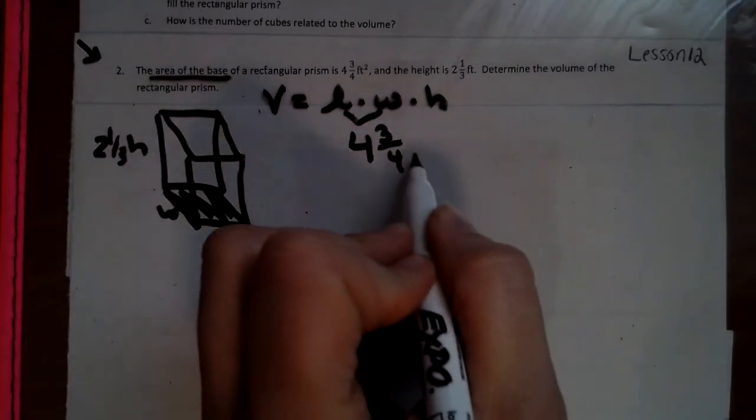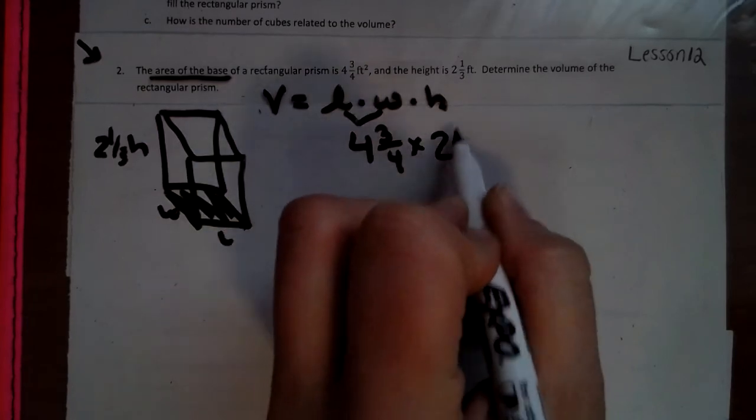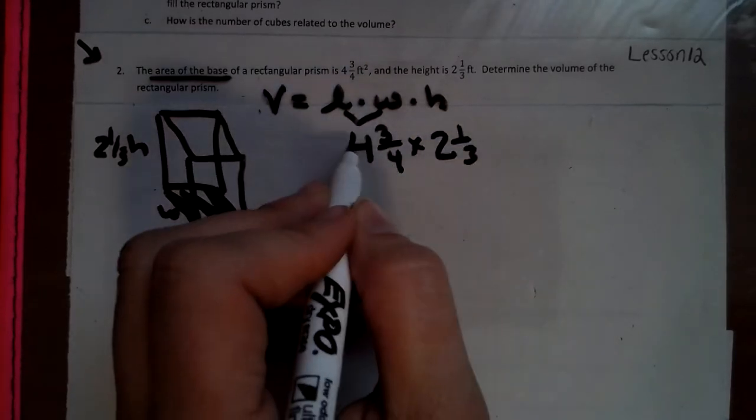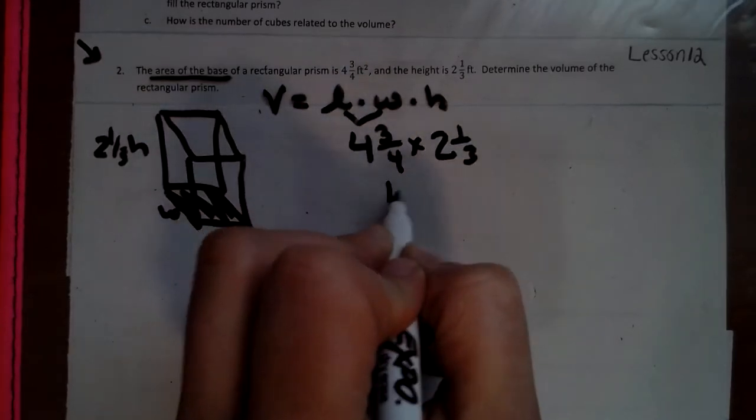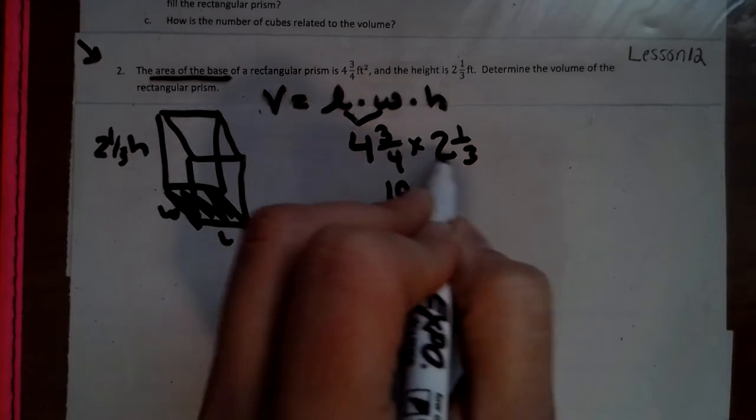Remember, area is length times width. And we have to times this by 2 and a third. So now 16, 17, 18, 19, 6, 7 thirds.